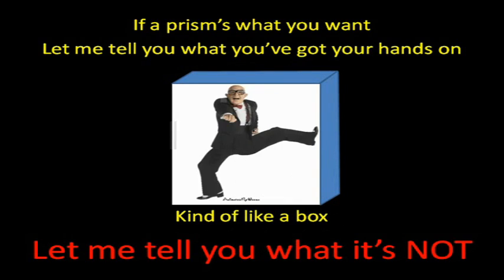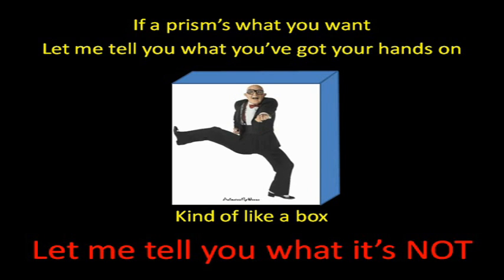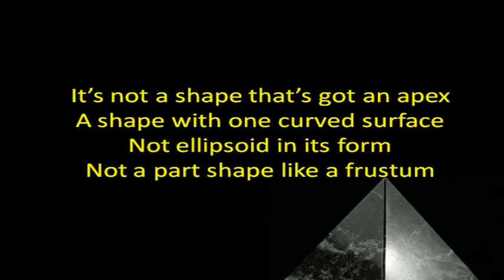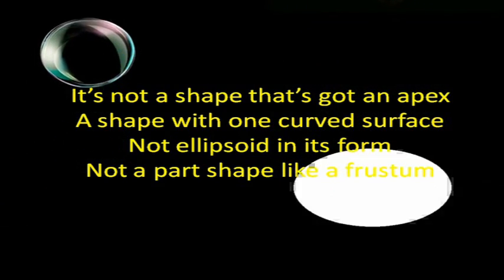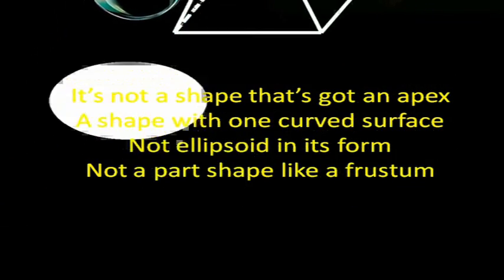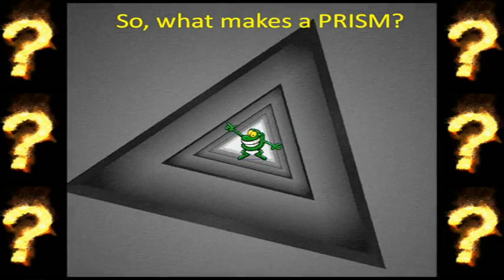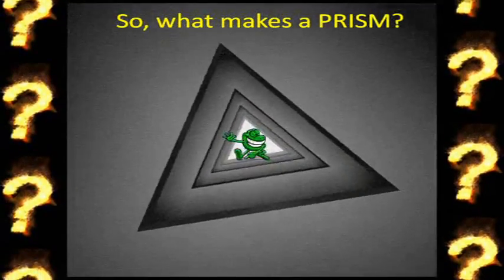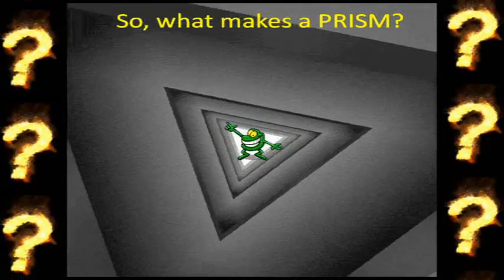If a prism's what you want, let me tell you what you got your hands on. Kinda like a box, let me tell you what it's not. It's not a shape that's got an apex, a shape with one curved surface. Not an ellipsoid in its form, not a part shape like a frustum. So what makes a prism?